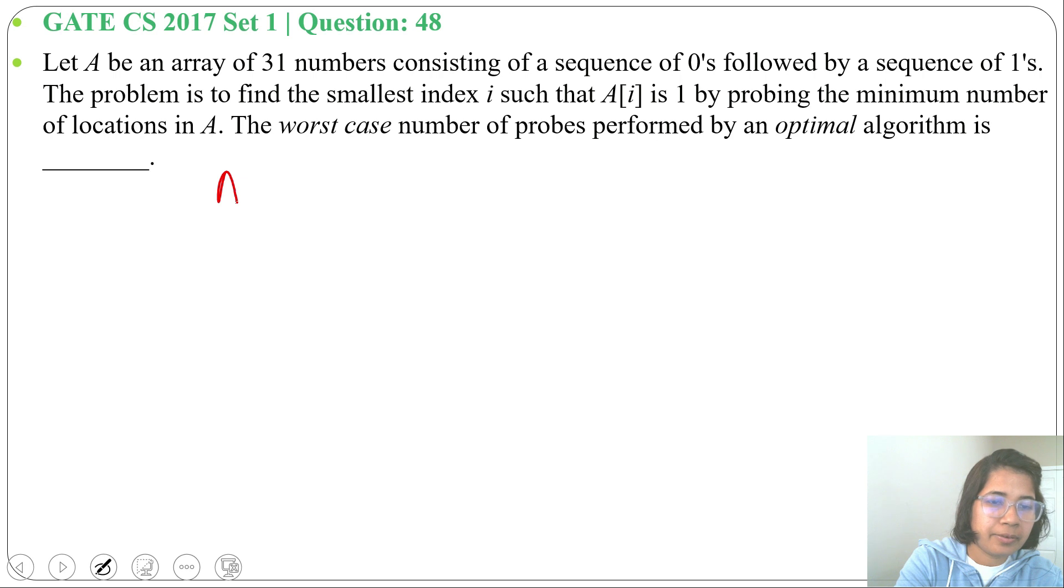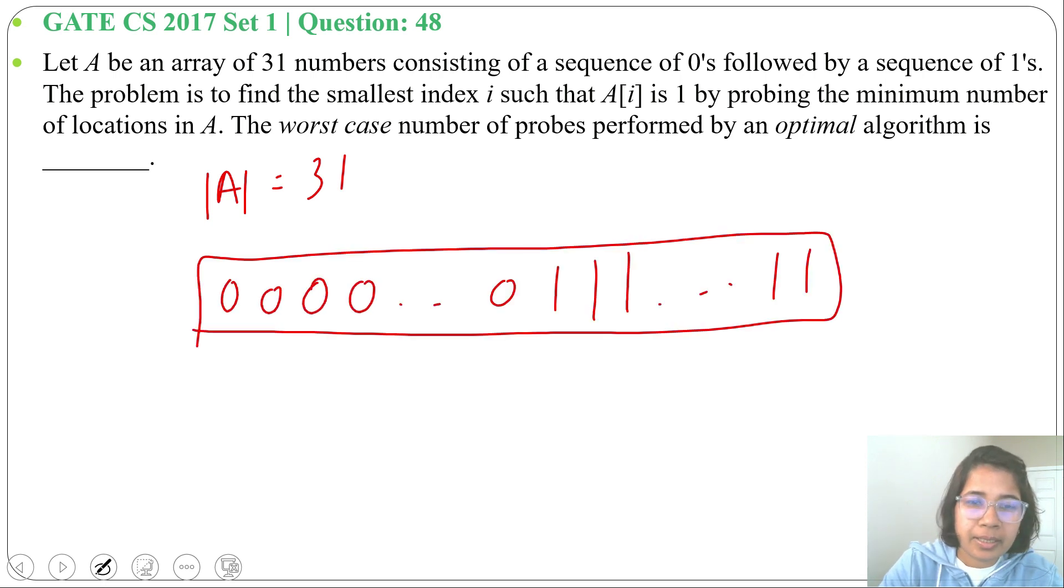One array is given and array size is 31. The array contains a sequence of zeros followed by a sequence of ones like this. And the problem is to find the smallest index i such that A[i] is 1.